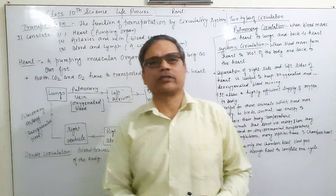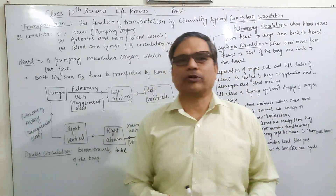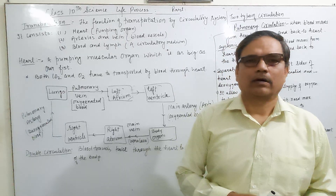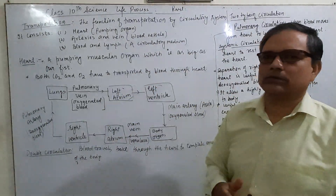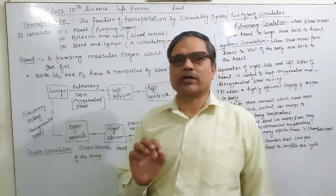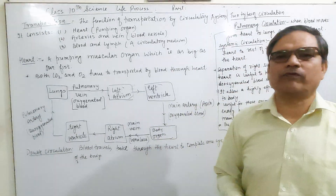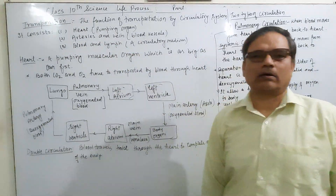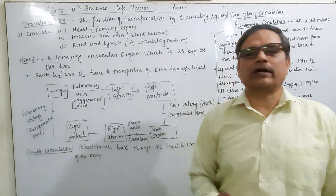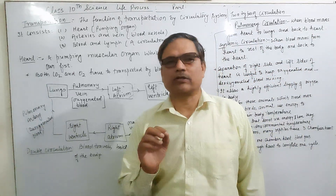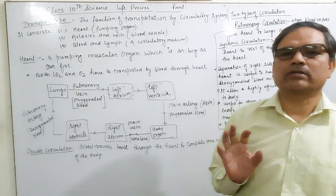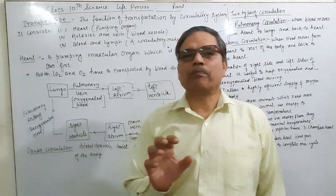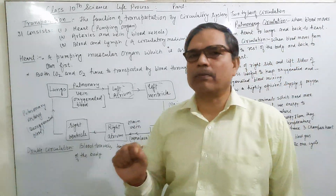Good morning students, this is Hansa, your science teacher. Today we will discuss transportation related to the circulatory system inside the body. The circulatory system consists of different parts through which transportation takes place. The first component is the heart, which is a pumping organ — it pumps blood inside the body.